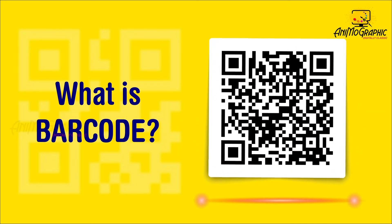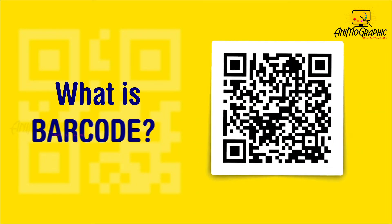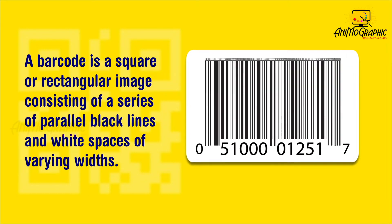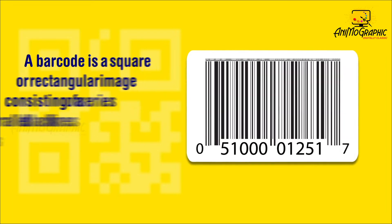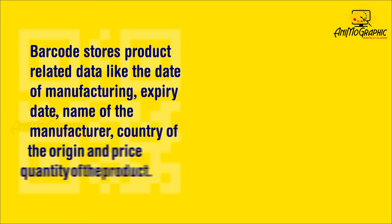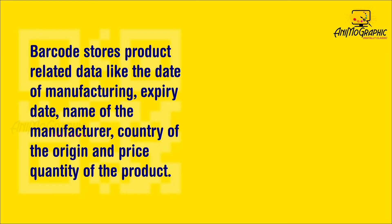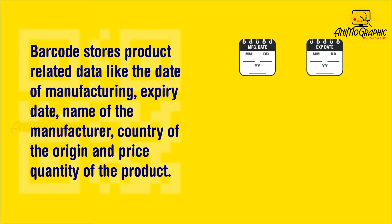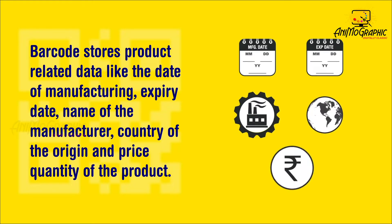What is a barcode? A barcode is a square or rectangular image consisting of a series of parallel black lines and white spaces of varying widths. Barcode stores product related data like the date of manufacturing, expiry date, name of the manufacturer, country of origin, and price and quantity of the product.